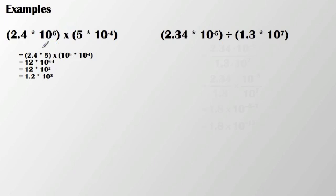the first thing I'm going to do is take that 2.4 times 5, multiply those values together. Then I'm going to take that 10 to the sixth and 10 to the fourth and multiply those values together.